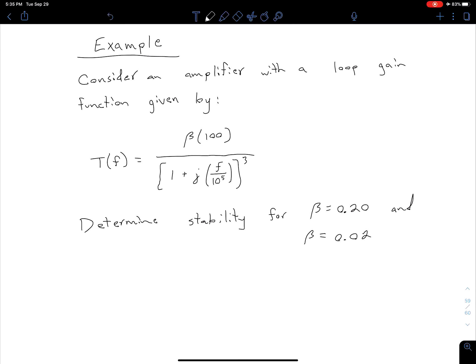Let's look at a general example where we want to determine amplifier stability based on the loop gain and feedback transfer function. For this particular amplifier we're given the loop gain function with this expression here and we're asked to determine the stability for two different values of beta.